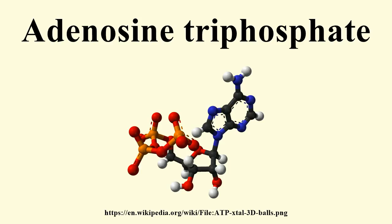Both NADH and FADH₂ are recycled to their oxidized states via the electron transport chain, which generates additional ATP by oxidative phosphorylation. The oxidation of an NADH molecule results in the synthesis of two to three ATP molecules, and the oxidation of one FADH₂ yields between one and two ATP molecules. The majority of cellular ATP is generated by this process. Although the citric acid cycle itself does not involve molecular oxygen, it is an obligately aerobic process because O₂ is needed to recycle the reduced NADH and FADH₂ to their oxidized states.